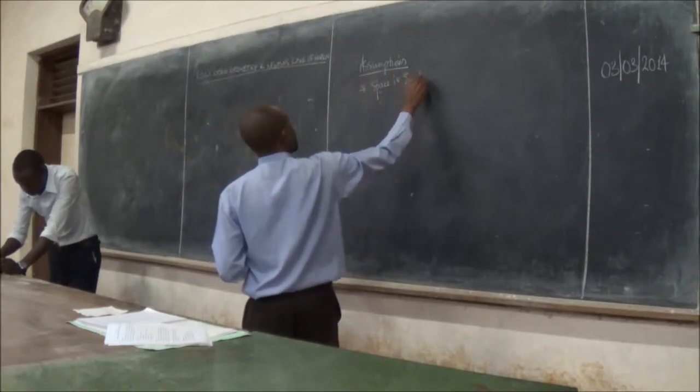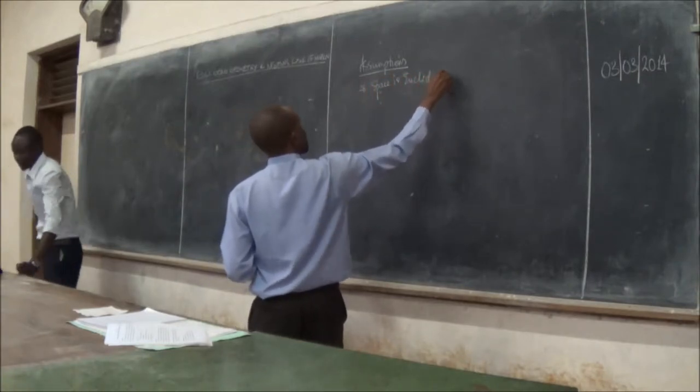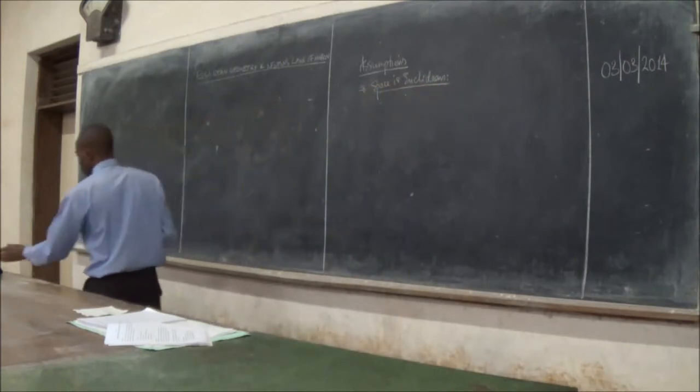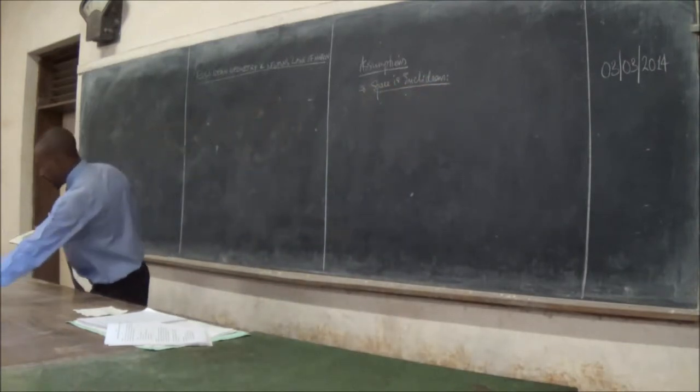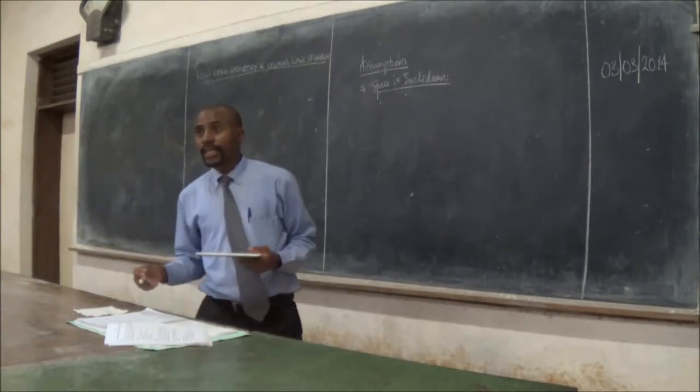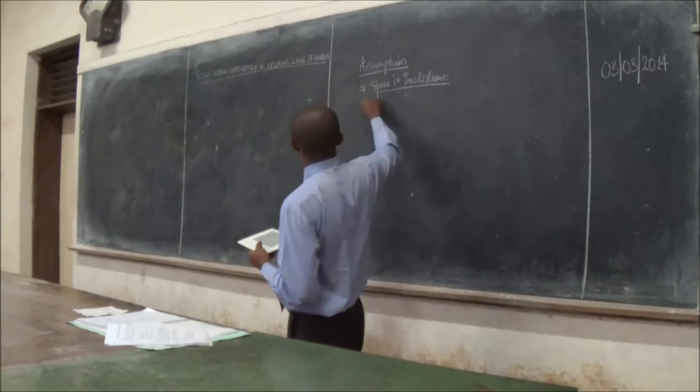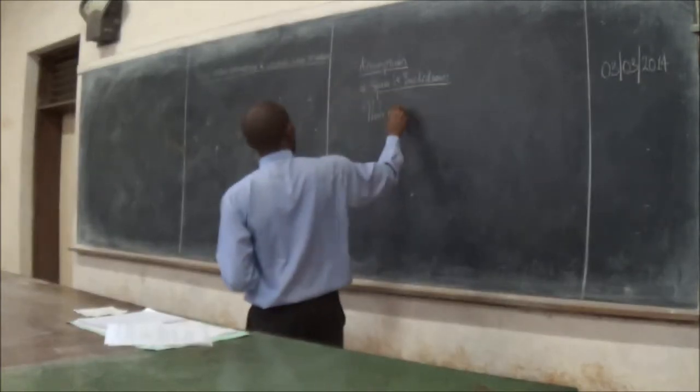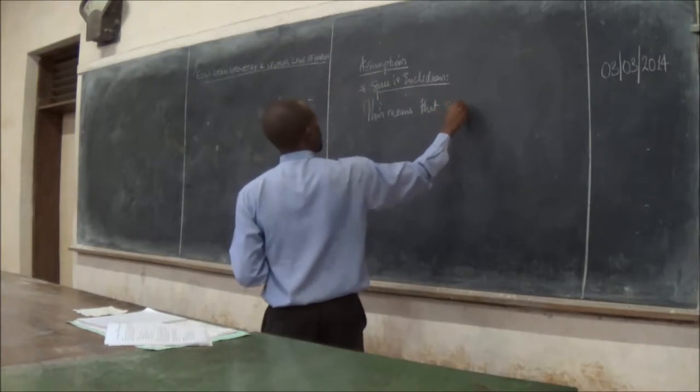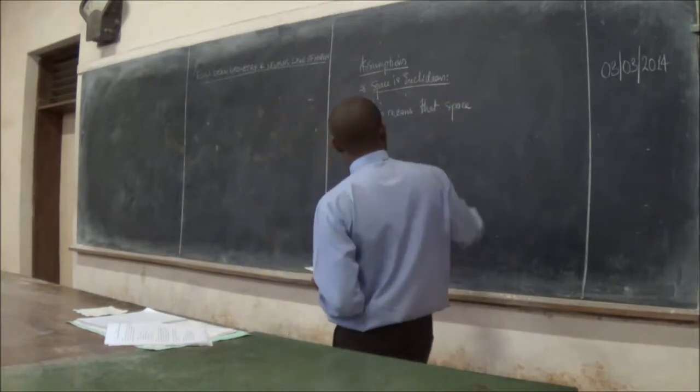So the assumptions are that space is Euclidean. And the result of the definition of this, or the impression of this, this means that the space is geometrically uniform.